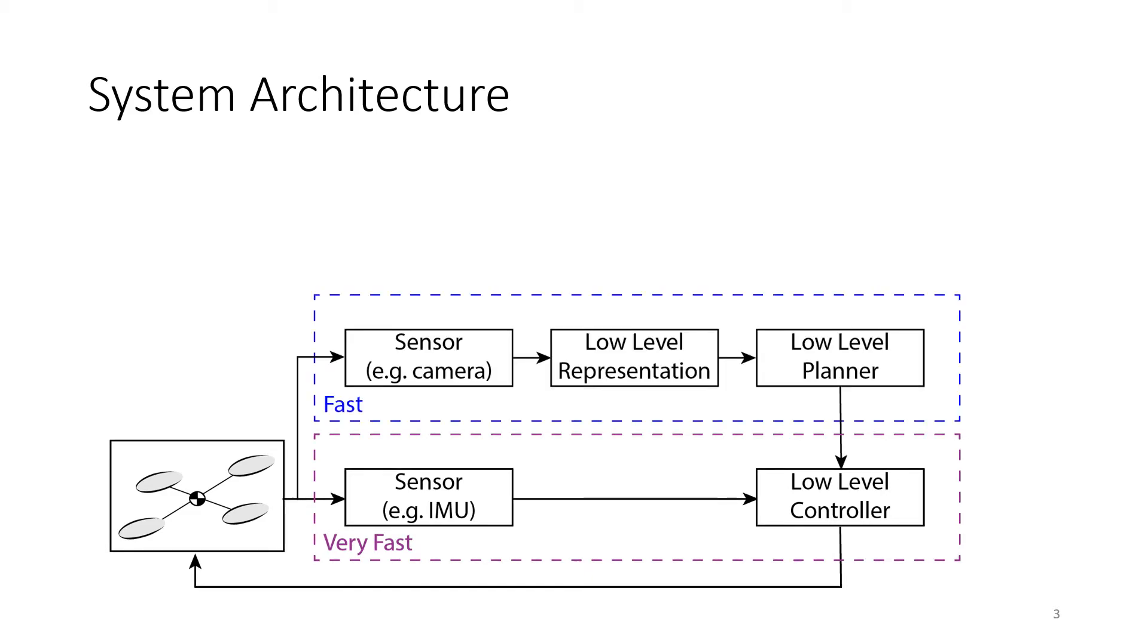Then on top of that, we have a slightly slower but still fast running control loop that takes some sensor measurements of the environment, say with a lidar or in this case a depth camera, turns those into some low-level representation that could be either a local map or just the depth image itself.